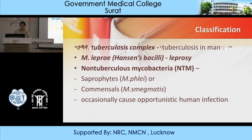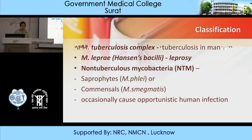Mycobacteria are classified into three forms. One is the Mycobacterium tuberculosis complex, which causes tuberculosis in humans. Second is Mycobacterium leprae, also known as Hansen's bacilli, which causes leprosy. Third is the non-tuberculous mycobacteria (NTM), which are saprophytes — for example, M. phlei — or commensals such as M. smegmatis, and occasionally cause opportunistic infections.